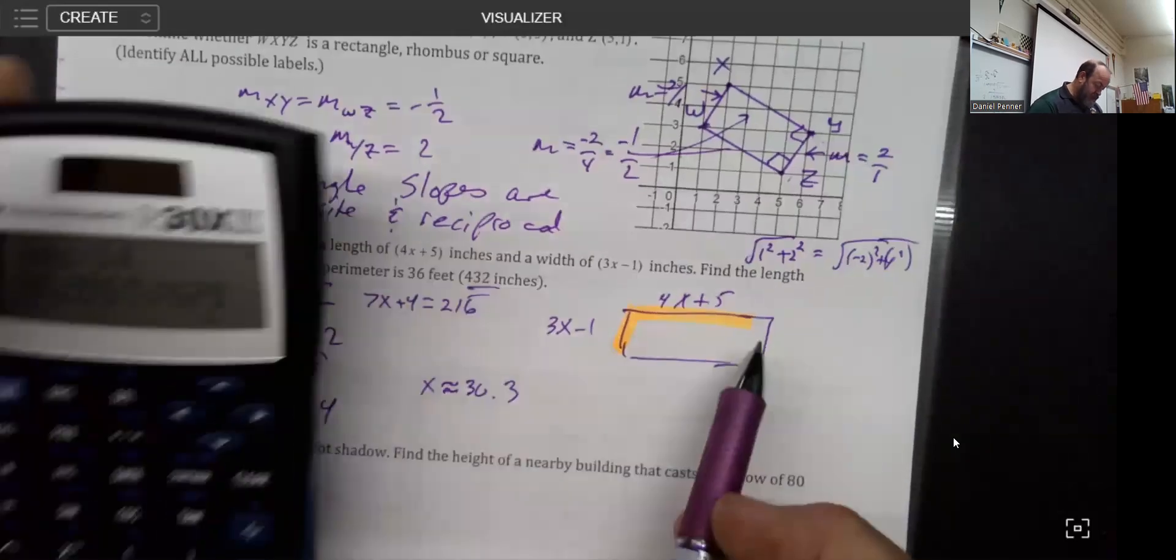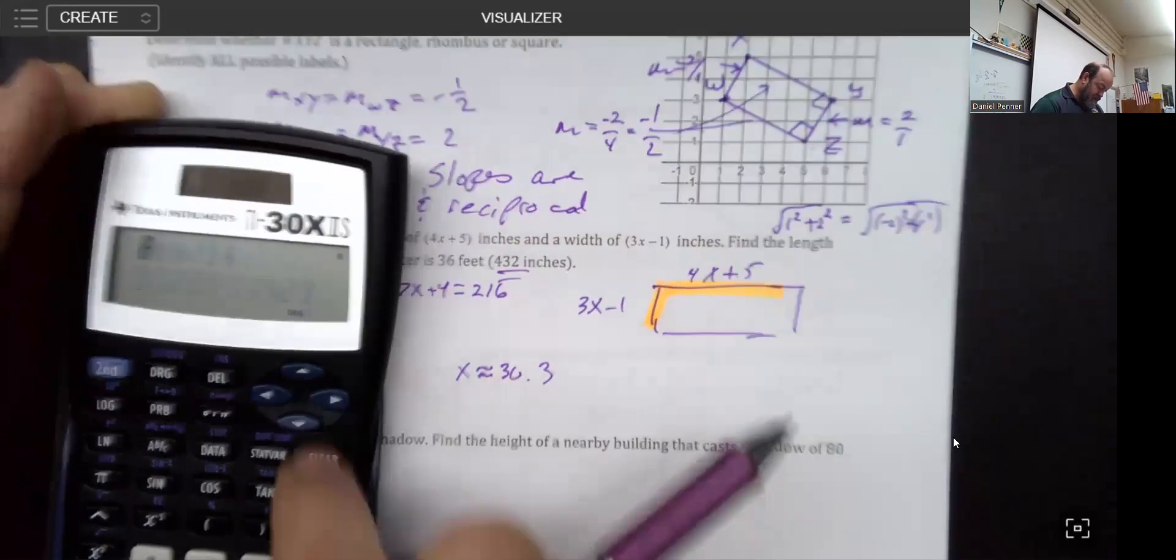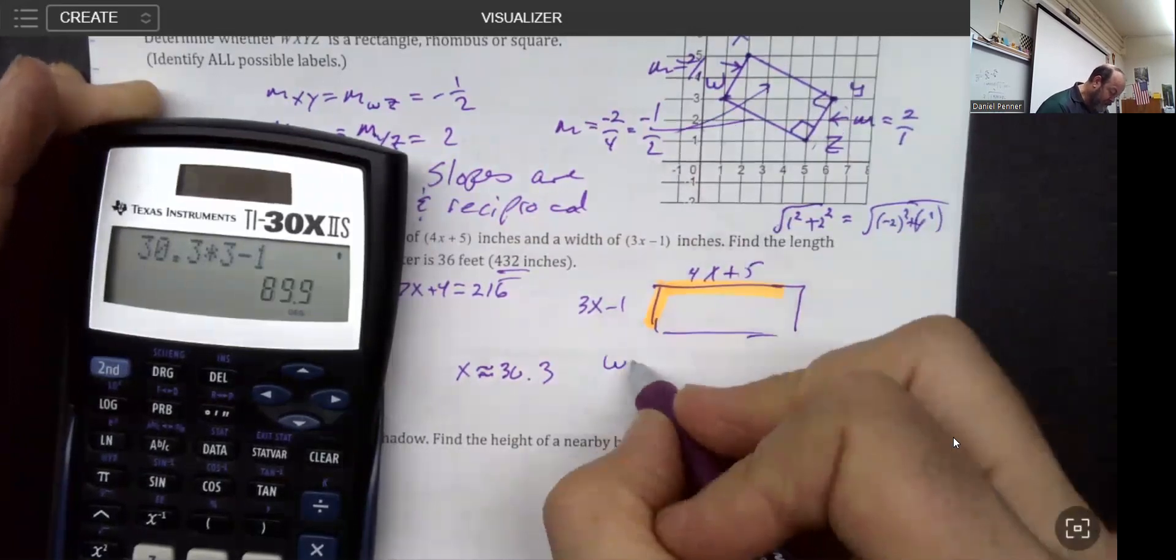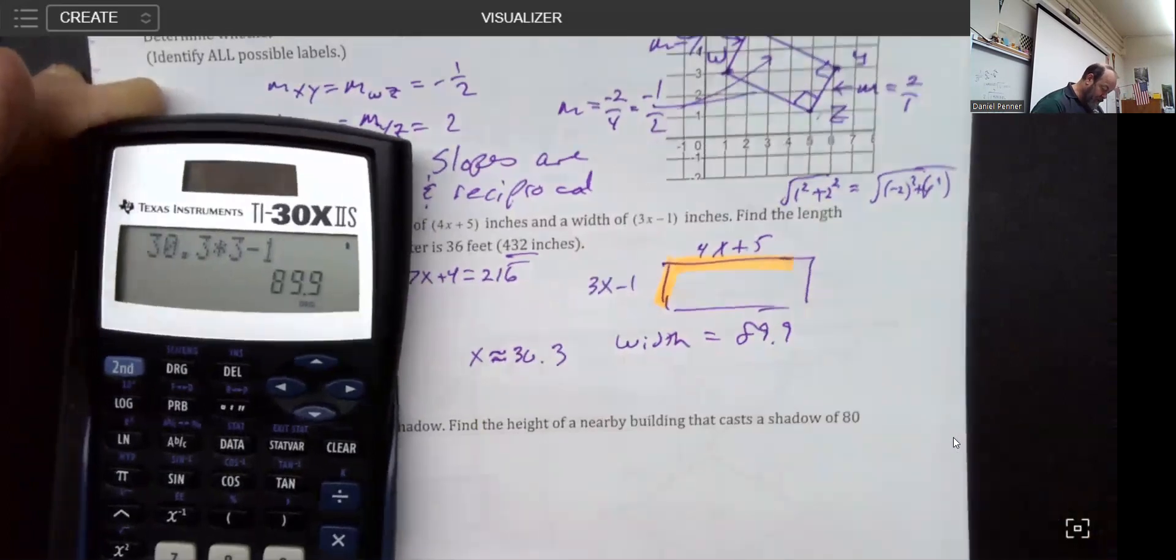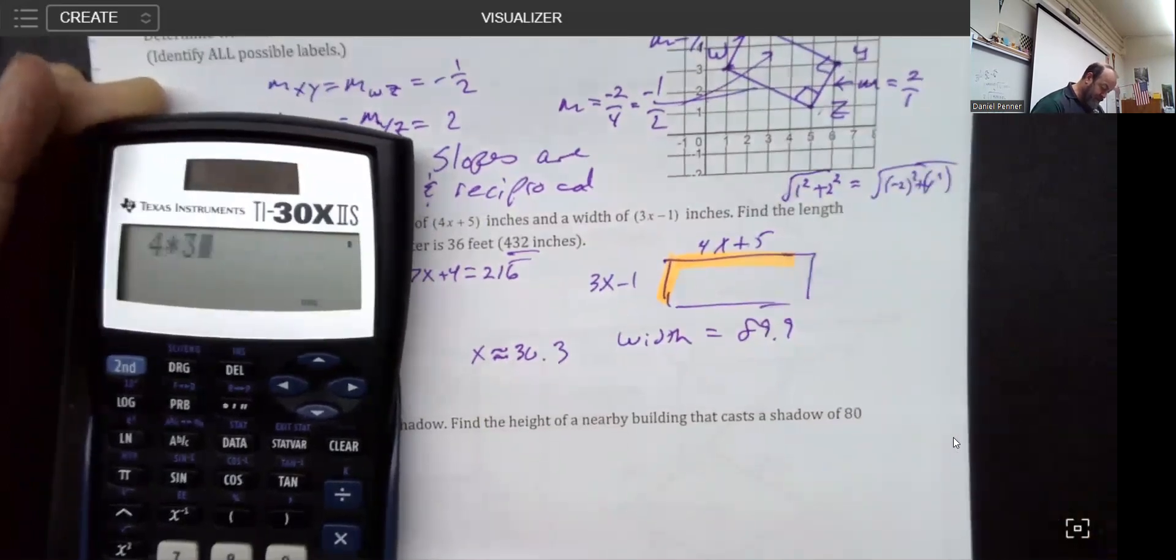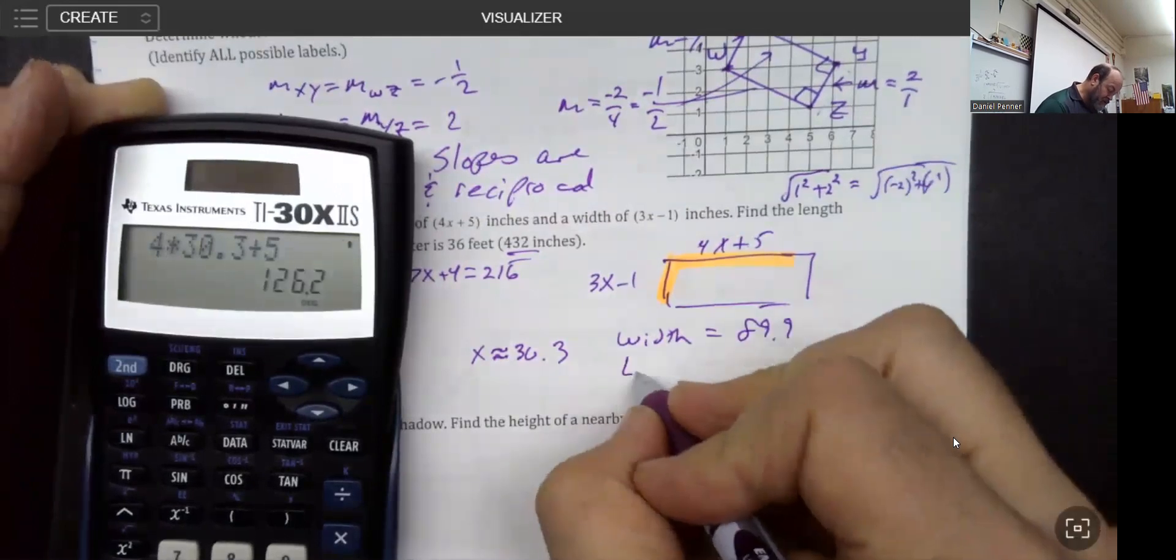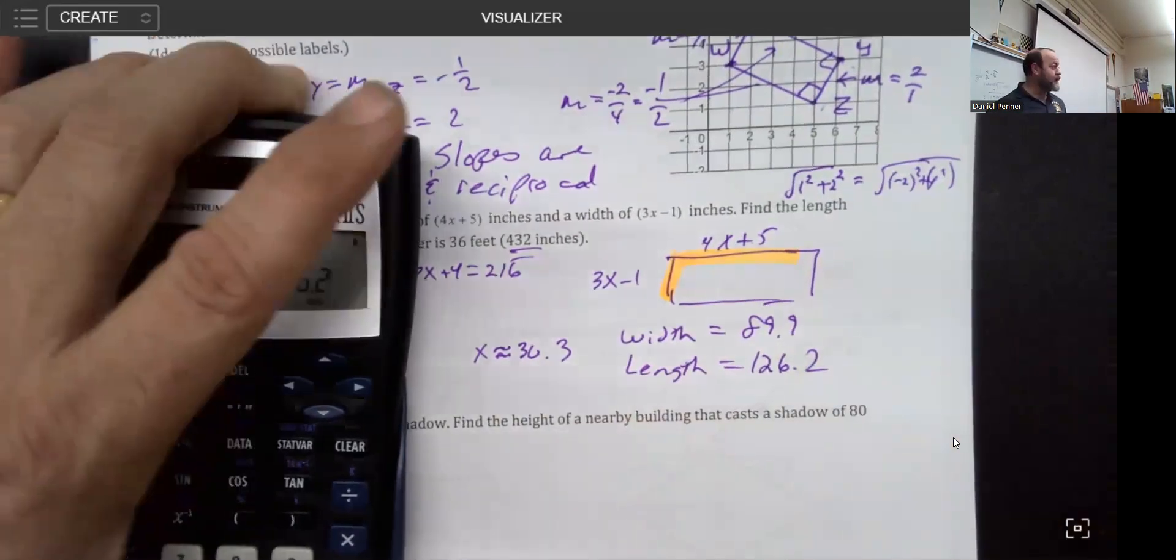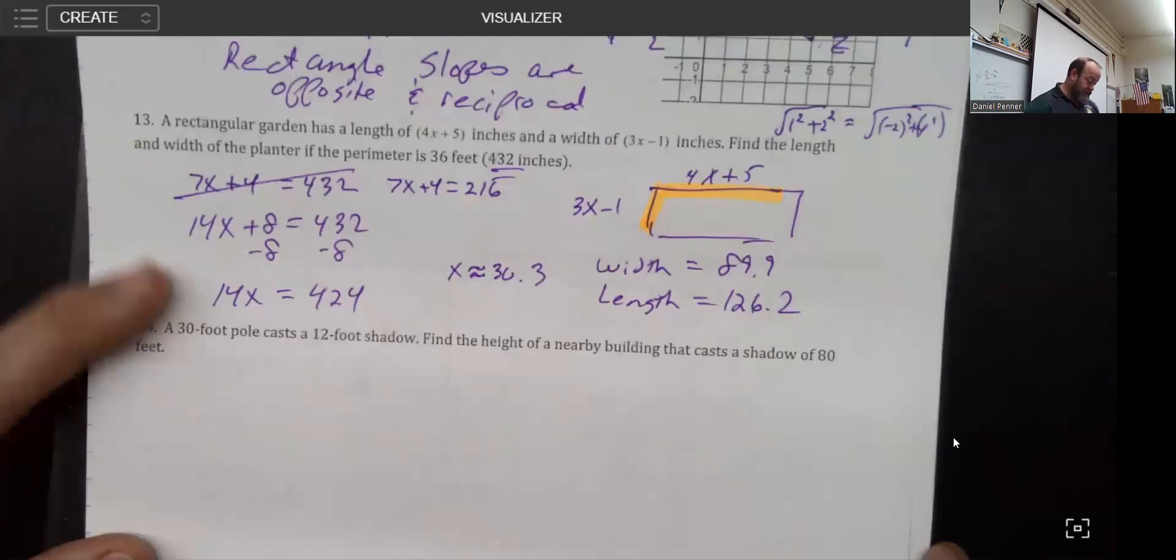If we took that 30.3, then 30.3 times 3 minus 1 would be a width of 89.9, and the length would be 4 times 30.3 plus 5. I could do a little bit nicer than this if I didn't round as much as I did, but I felt like that was probably a little closer to how you guys would structure that.